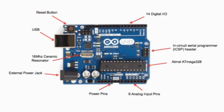Let us discuss the hardware part of an Arduino board. Here you can see the Arduino Uno, which is the most commonly used type. In our ATL lab, students mostly make projects with this. This is the Arduino Uno board, and there are a few parts of it which we need to know. Let us start with the digital pins.